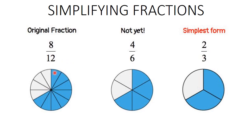Equivalence means they represent the same value. Look at this pie cut into 12 segments — look at the shaded portion. Imagine you've been given all the shaded portions and the other parts go to your friend. That means you've taken 8 portions out of 12. Now imagine that same pie cut into 6, and you are also given the shaded portion — can you see it's the same?